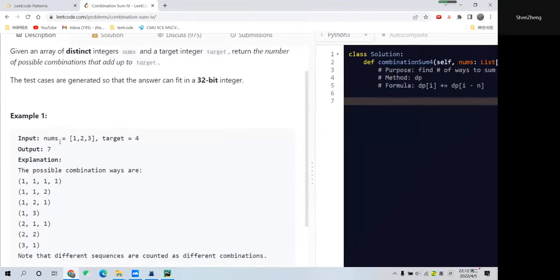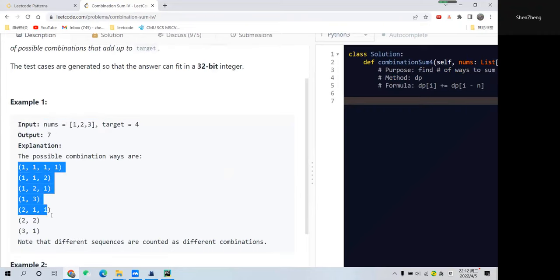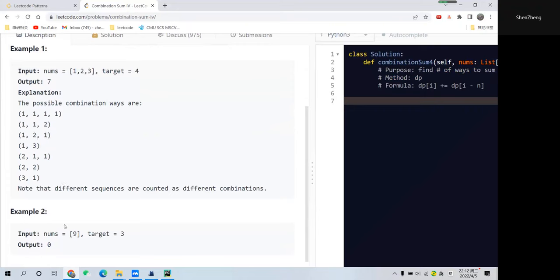Let's check Example 1. Numbers include 1, 2, 3, and target is 4. There are total seven ways which are listed here to get up to the target, so we return 7. In Example 2, all numbers equal 9, but the target is 3, so there's no way to go from the single 9 to 3. That's why we return 0.